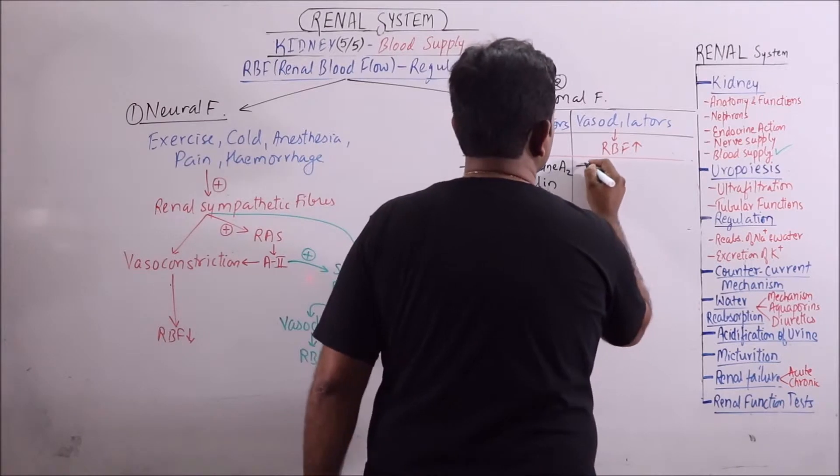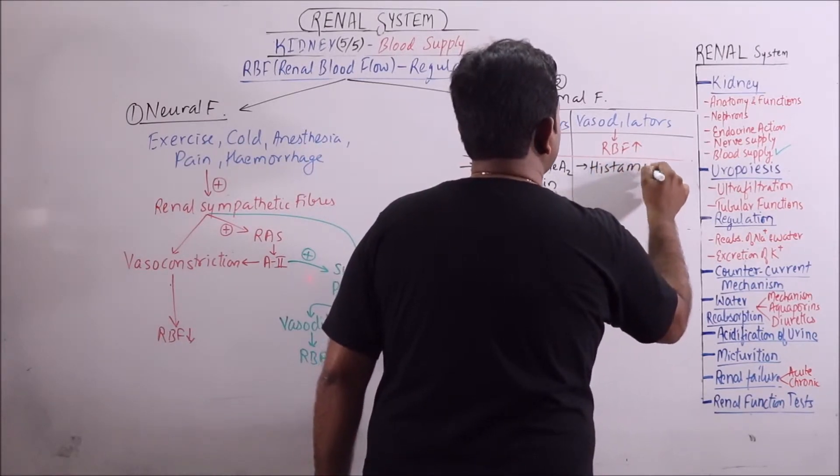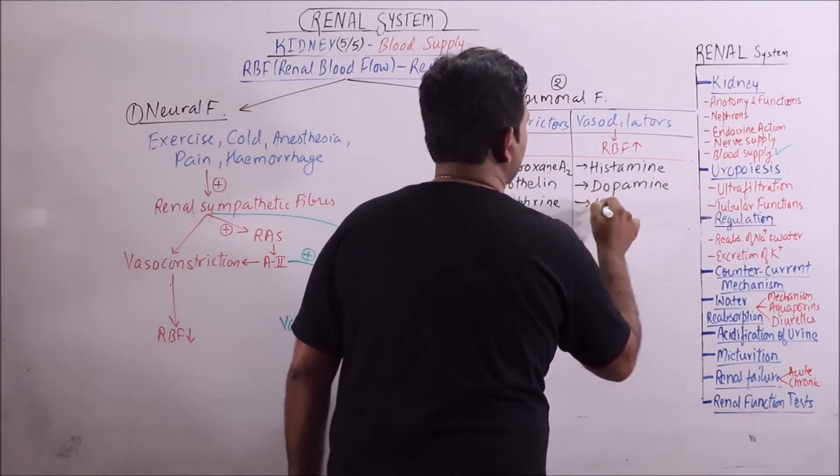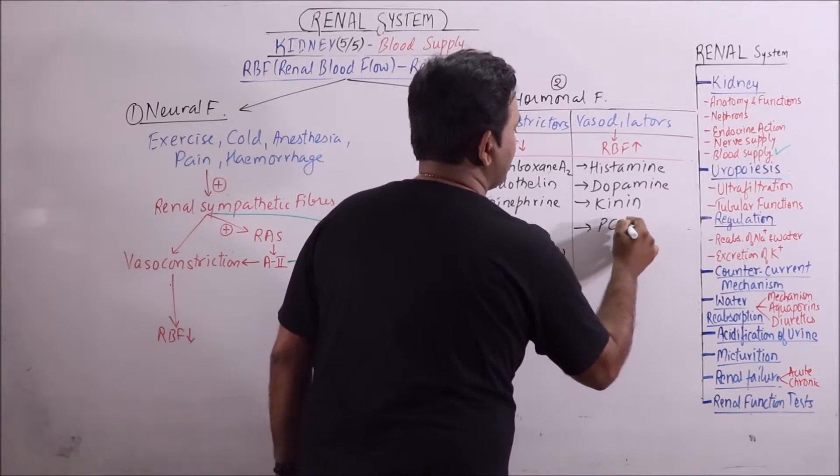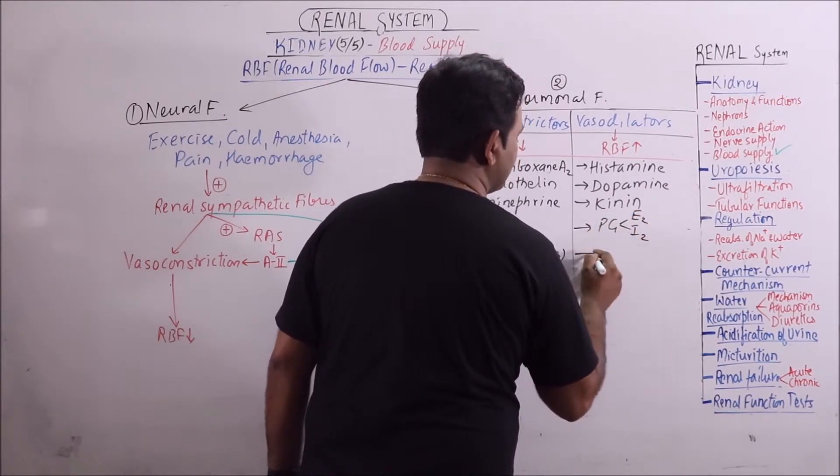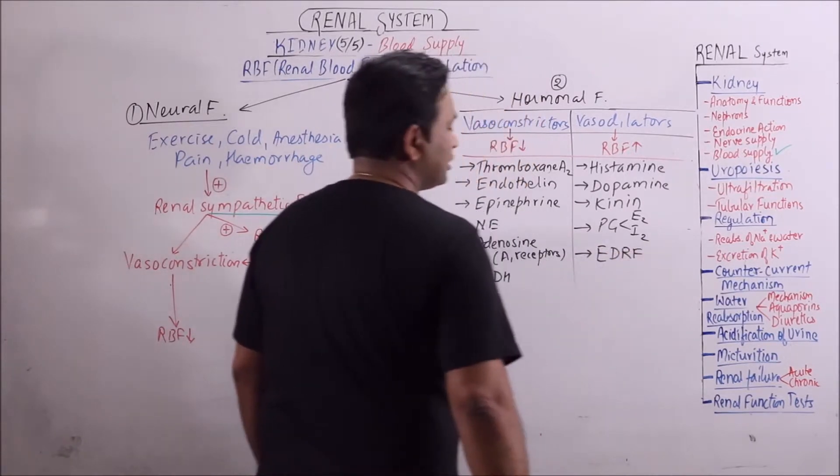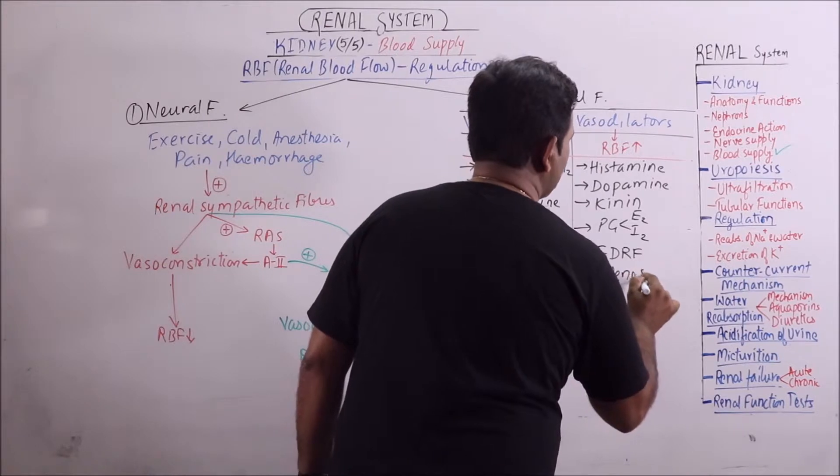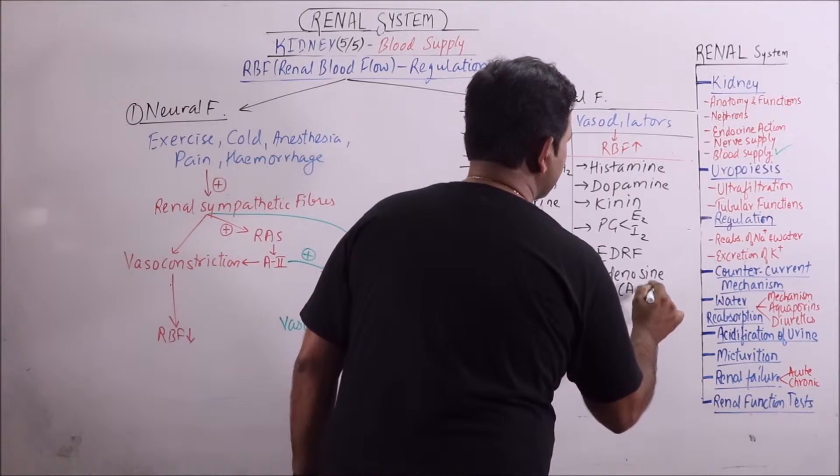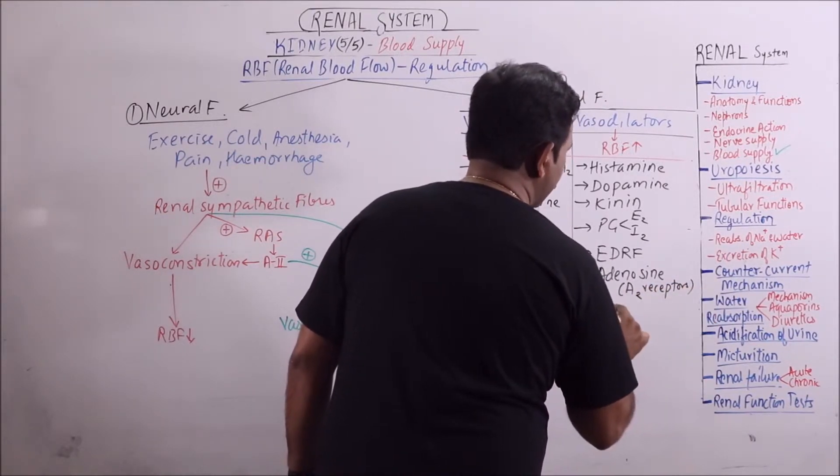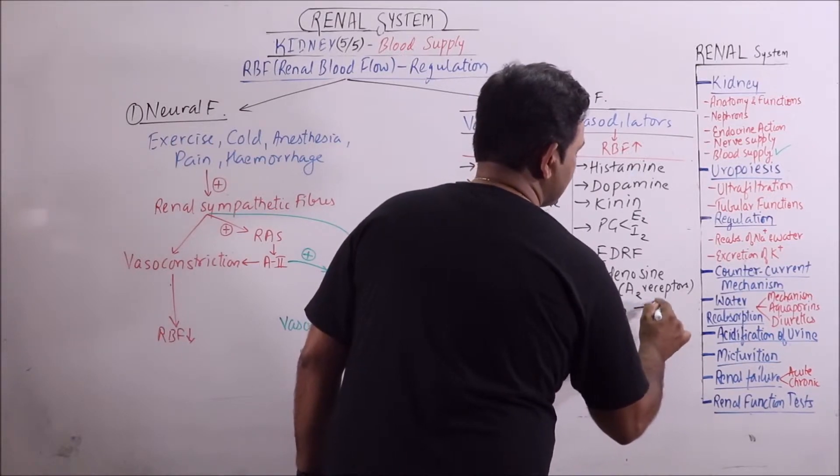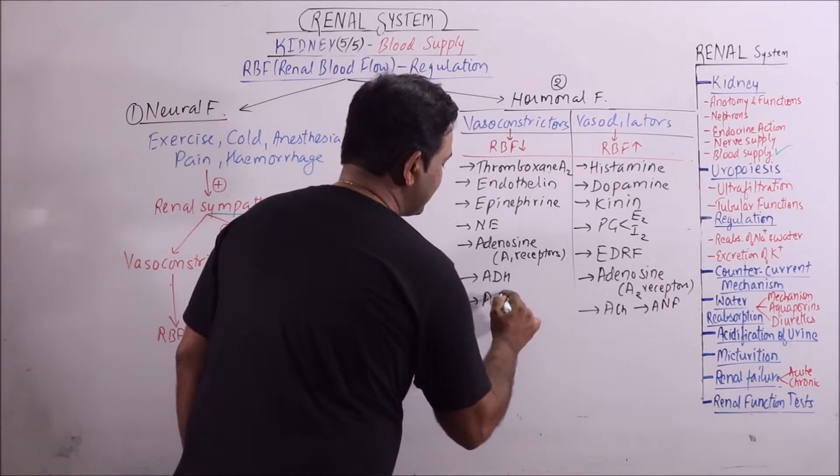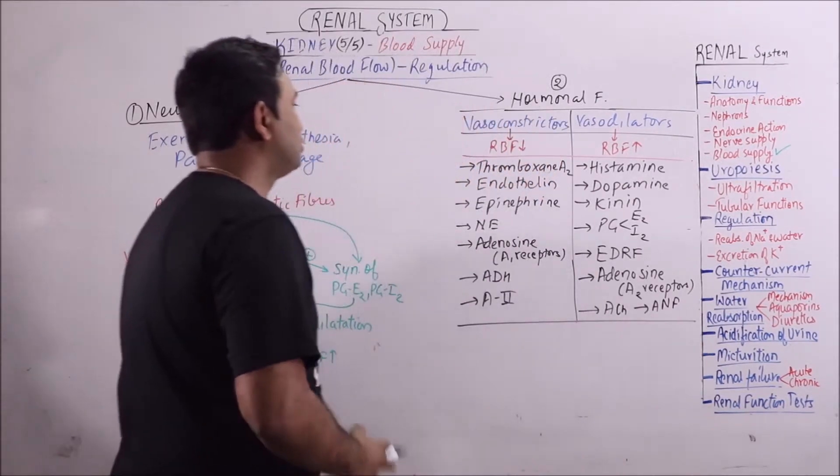Here vasodilators: histamine, dopamine, kinins, prostaglandin E2 and I2, then endothelial derived relaxing factor, then adenosine A2 receptor, then acetylcholine, and atrial natriuretic factor. Here angiotensin 2 can also be added. So these are the hormonal factors.